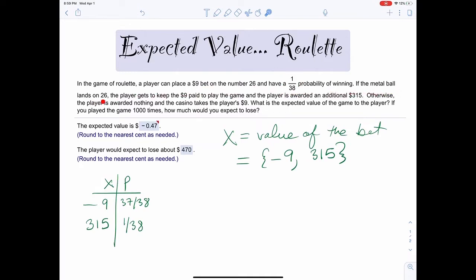If the metal ball lands on 26, the player gets to keep the $9 paid to play the game, and the player is awarded an additional $315. Otherwise, the player is awarded nothing and the casino takes the player's $9. What is the expected value of the game to the player?